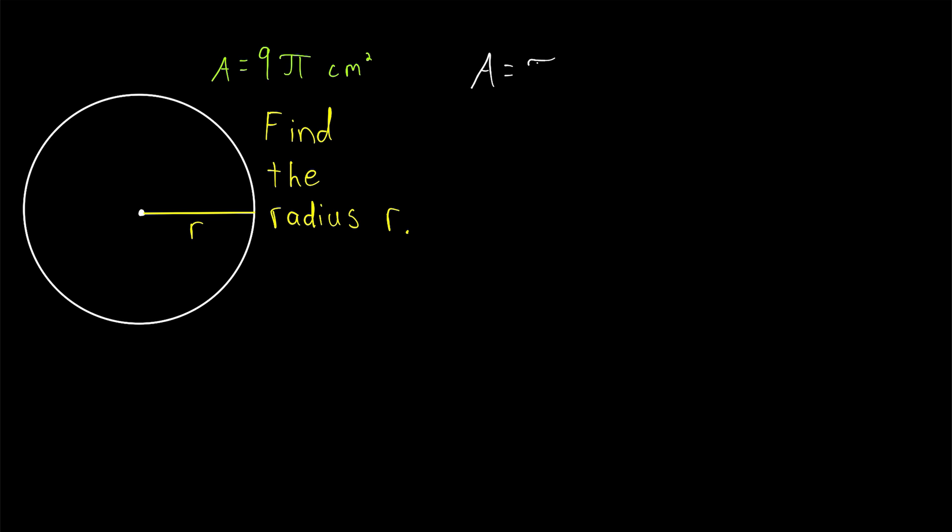The area of a circle is π times the radius squared. In this case, our area is 9π, so we have that 9π is equal to π times the radius squared.